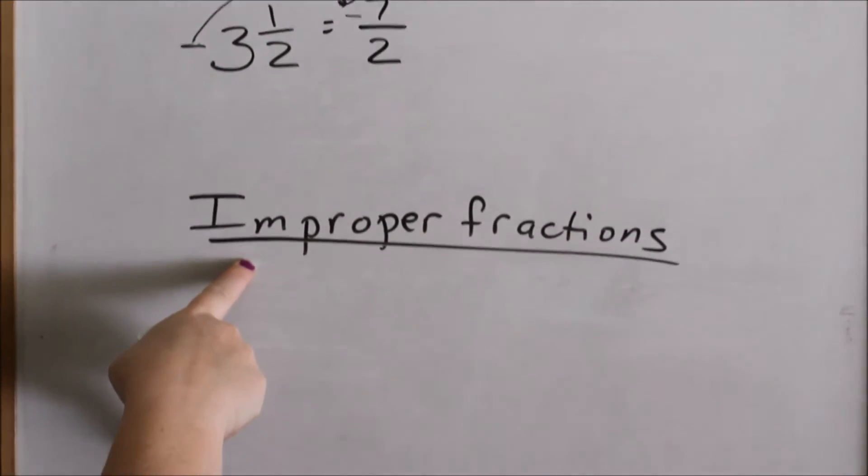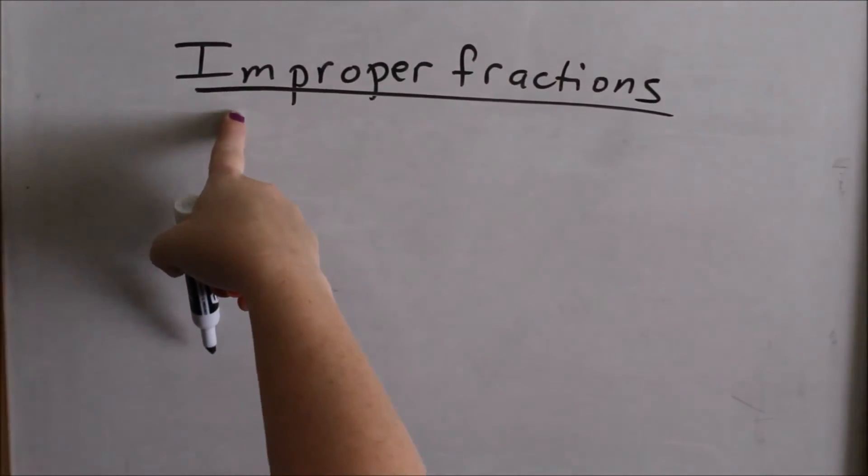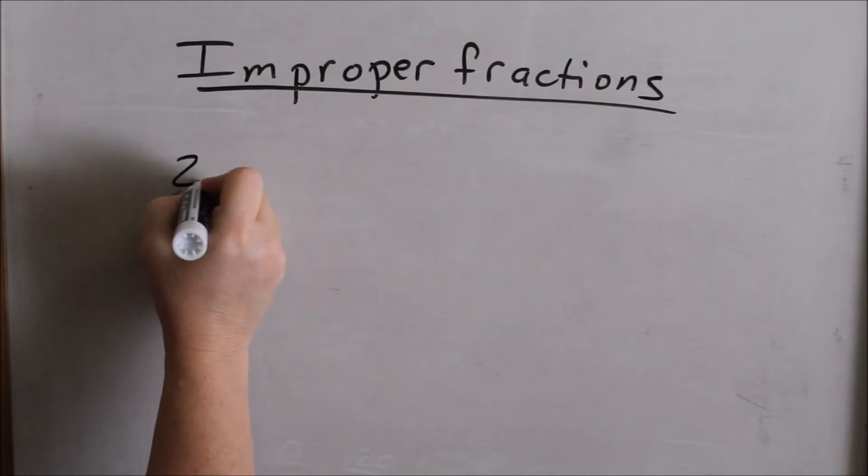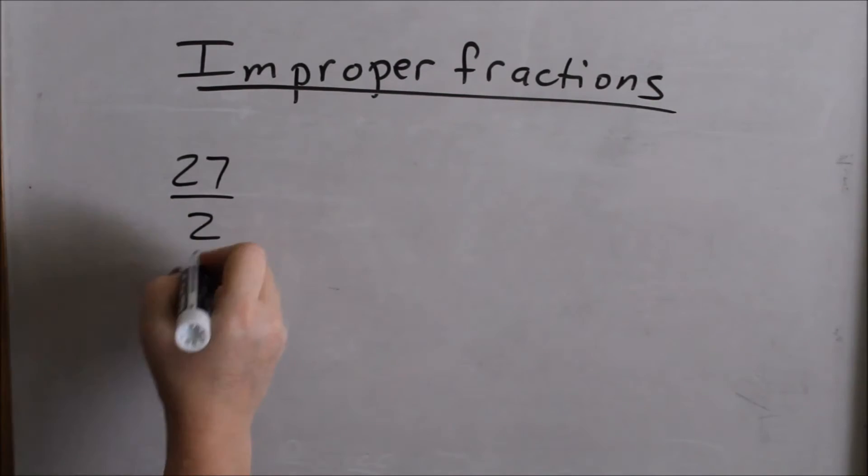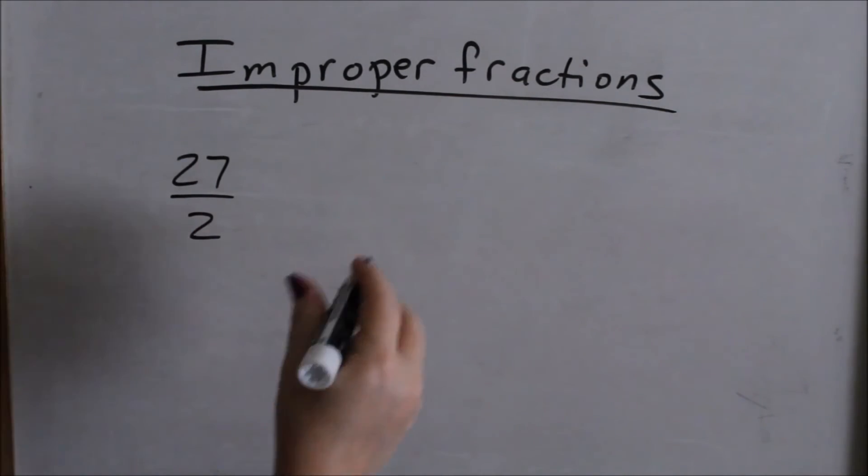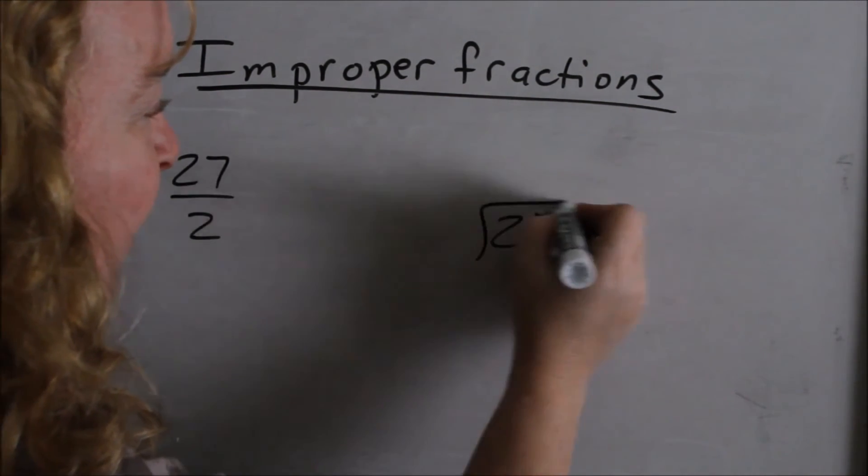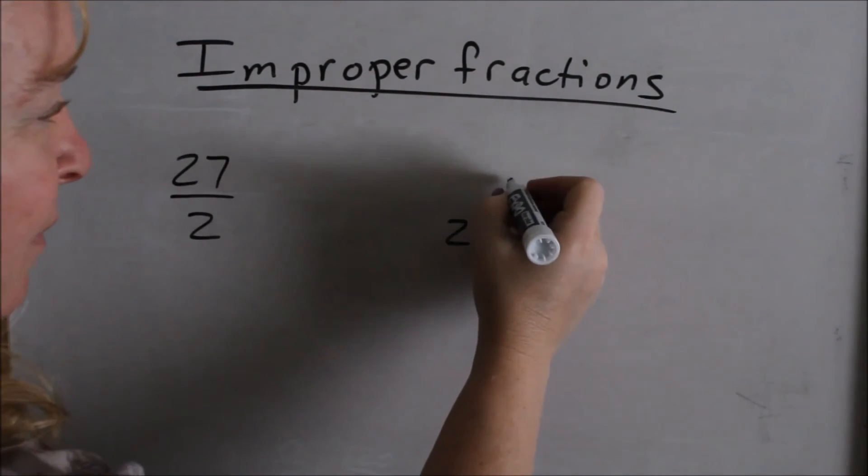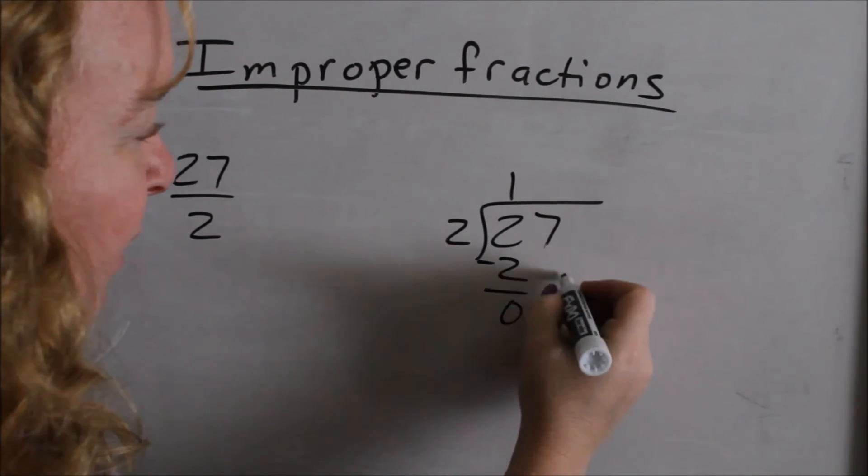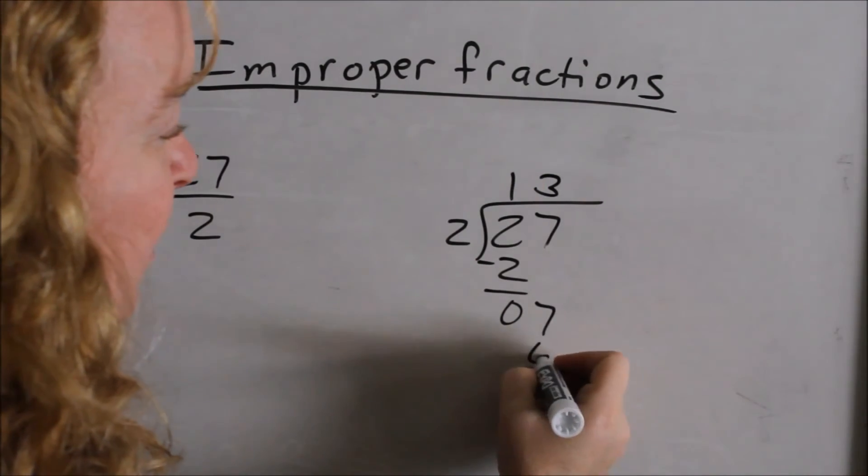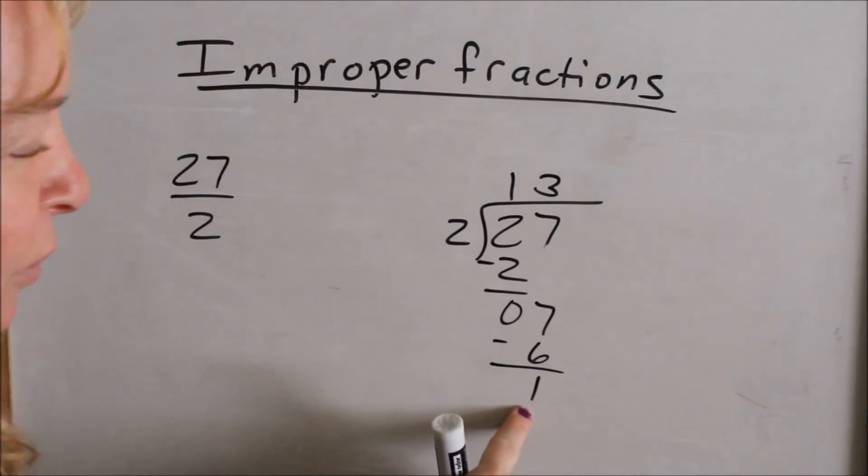Alright, now let's look at taking an improper fraction and turning it into a mixed number. Let's just say we're going to have 27 halves, 27 over 2. Remember this symbol means divide, 27 divided by 2. So you can think of this as 27 divided by 2. How many times does 2 go into 27? Subtract. Bring down your 7. 2 goes into 7, 3 times. 3 times 2 is 6. Subtract. You have a remainder of 1.